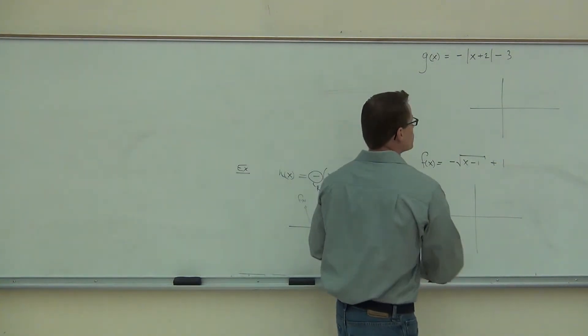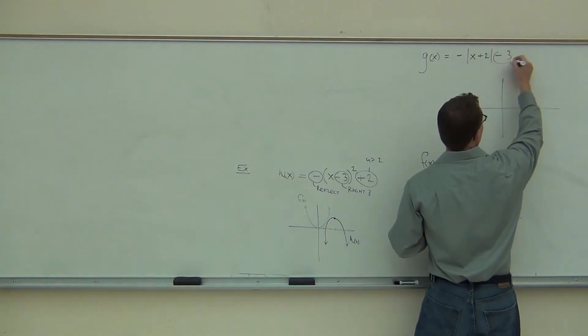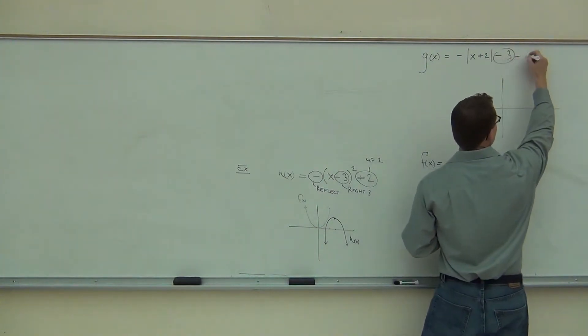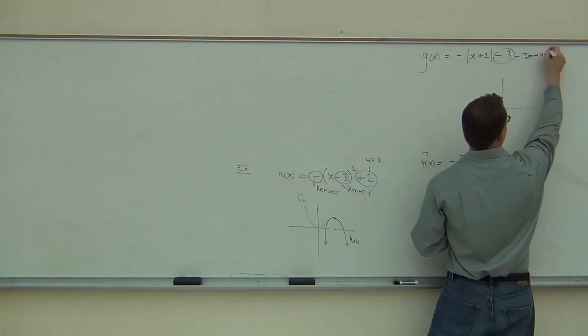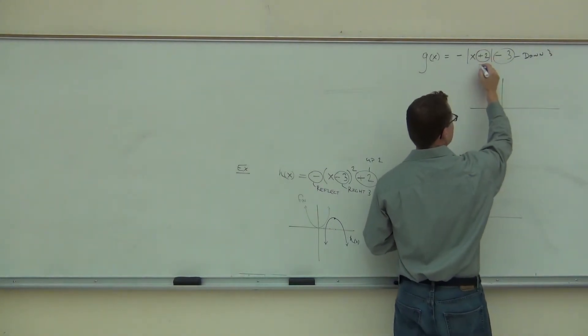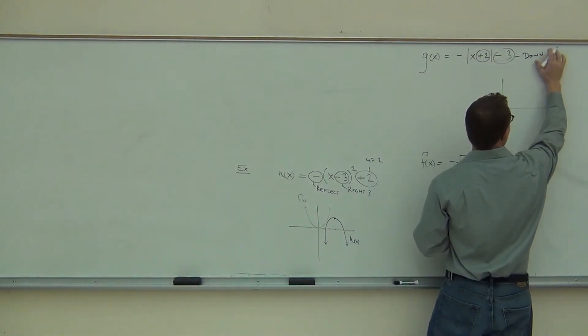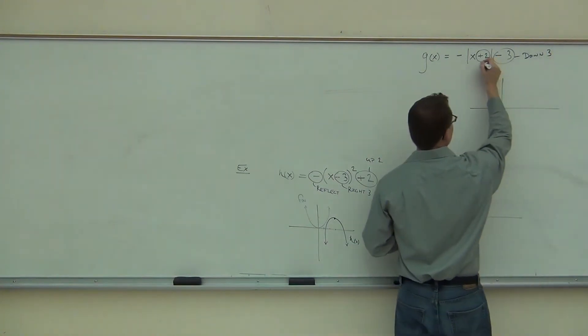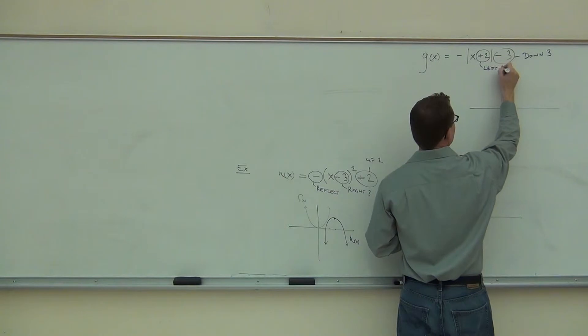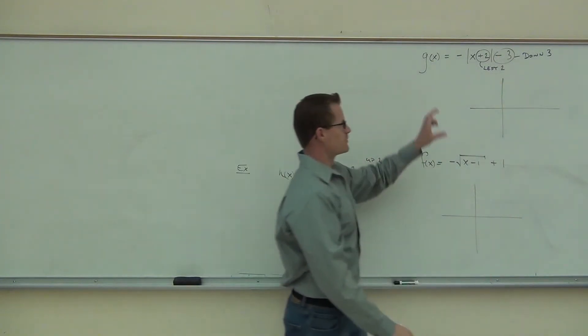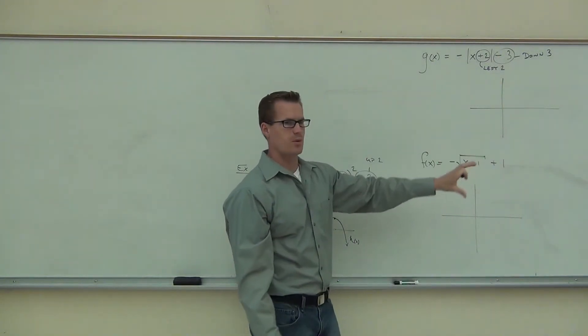We're going to go identify these things. So off to the right, we're going to start over here. What's that minus 3 tell us? Down 3. Good. And this in here, that's within the function, so that's going to be what? Left 2. That's right. I mean, correct? Left 2. Okay, so we have down 3, we have left 2, we have an idea about where this graph is going.